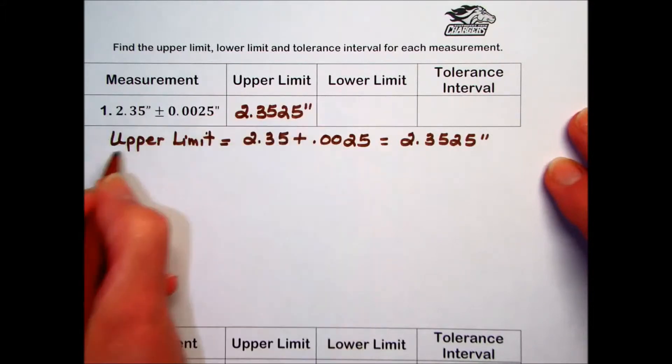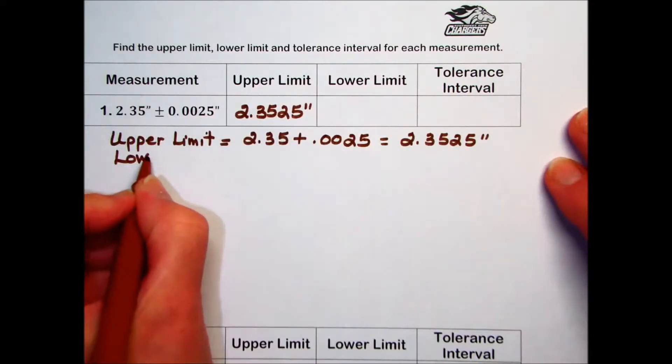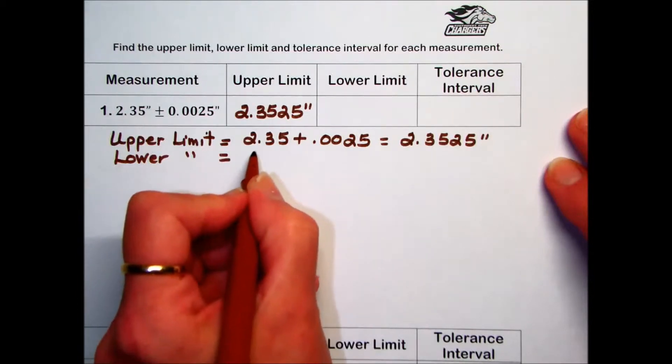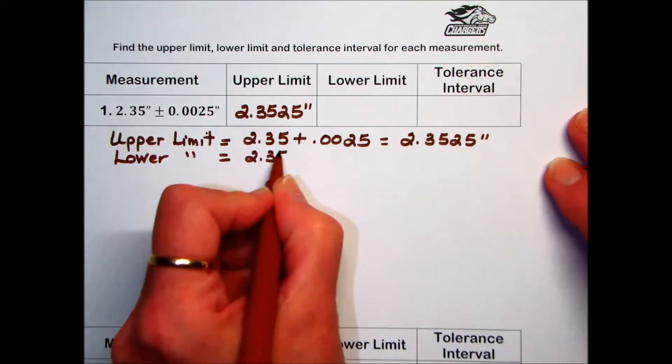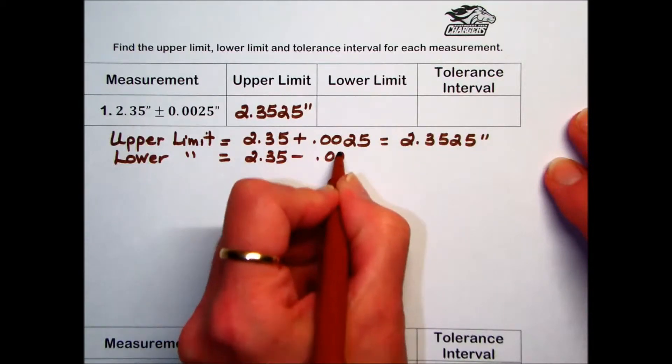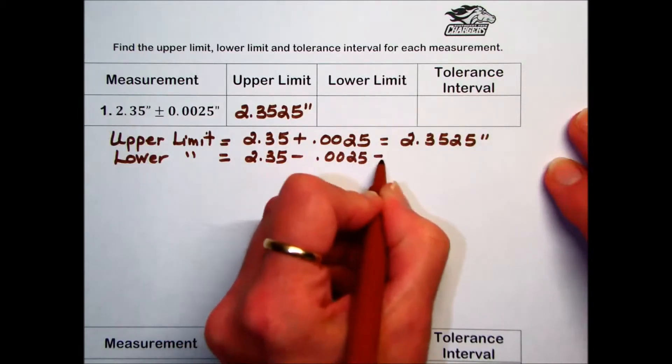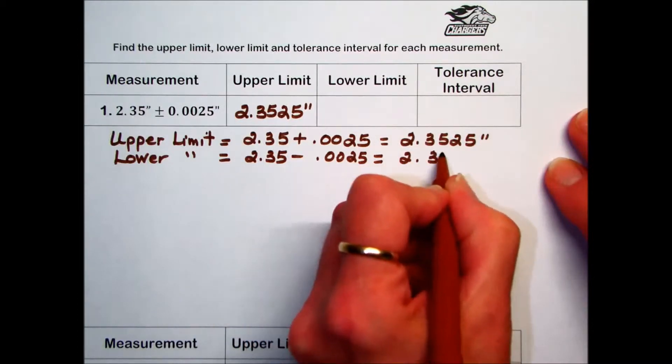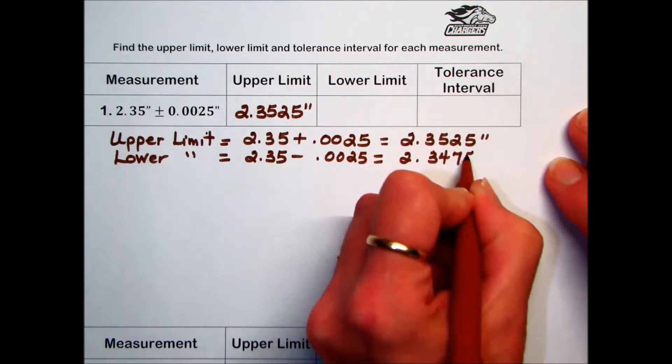For the lower limit, we'll take the standard measurement 2.35 and this time we'll subtract the tolerance from it. When we do that, we end up with 2.3475 inches.